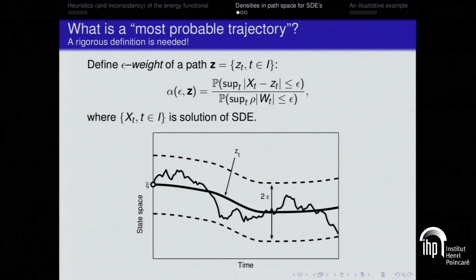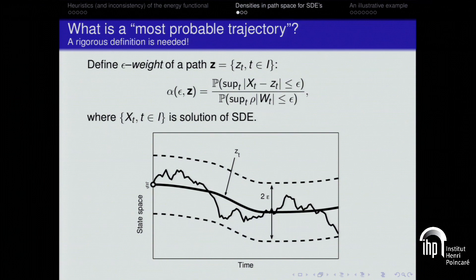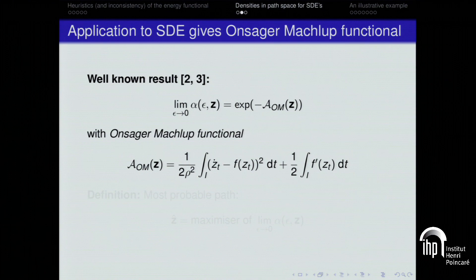To give a proper definition: the epsilon-weight of a path z is the probability that the solution of your SDE lies within an epsilon-neighborhood — a 'sausage' — around z, rescaled by the probability that the Wiener process lies in a small sausage around zero (the Wiener sausage). You then send epsilon to zero to get your density in path space.